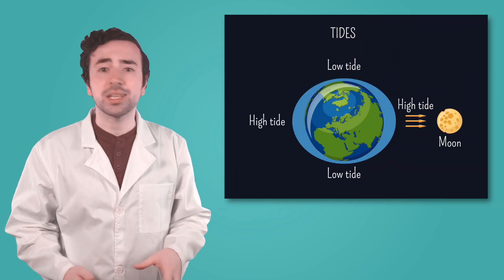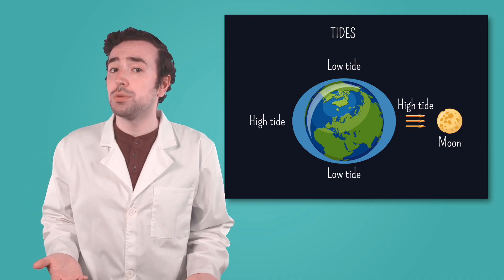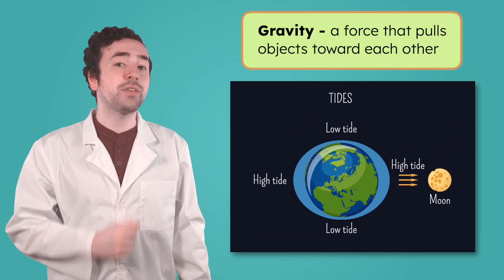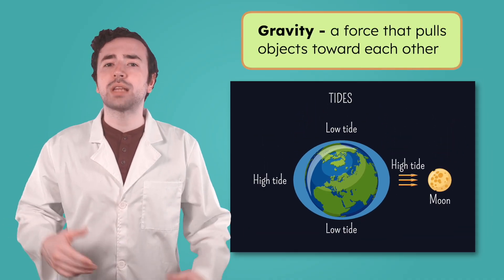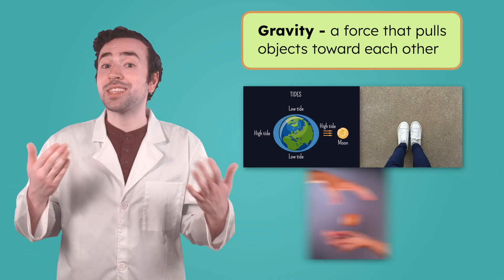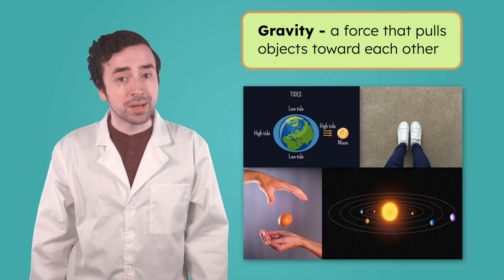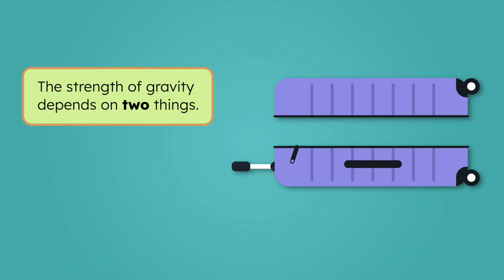You might remember gravity from when we talked about tides. It's the same force that pulls ocean water to create high and low tides on Earth. Gravity is a force that pulls objects toward each other. It's what keeps you on the ground, makes things fall when you drop them, and keeps the planets orbiting the sun.